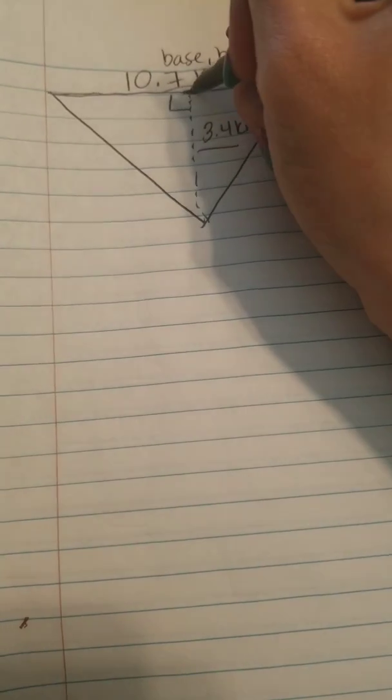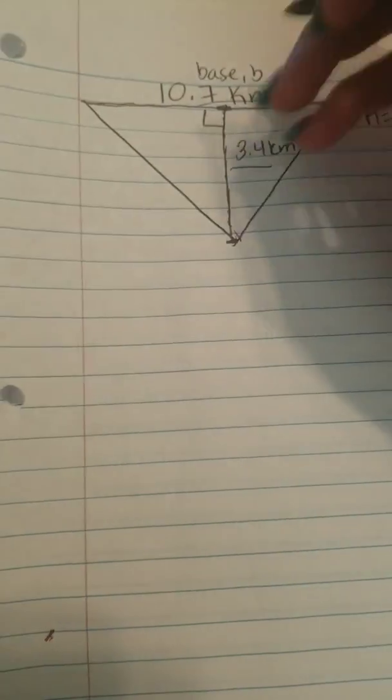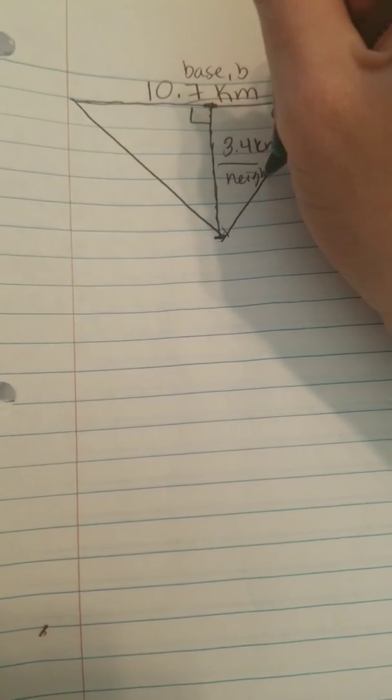The 3.4 is our height because it is measuring from the top to the bottom of the triangle. So that is our h.